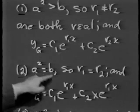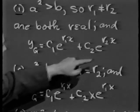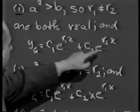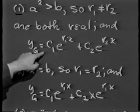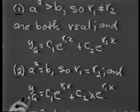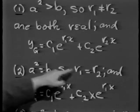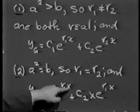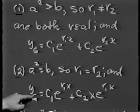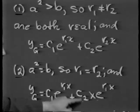For Case 2, when a squared equals b, r1 equals r2, so let's just call both r1. With r1 equal to r2, e to the r1x is a common factor and the two arbitrary constants amalgamate into one, so that's not a general solution. It turns out another solution — one that is not a constant multiple of e to the r1x — is xe to the r1x. We'll verify that shortly. The general solution is c1 e to the r1x plus c2 x e to the r1x.